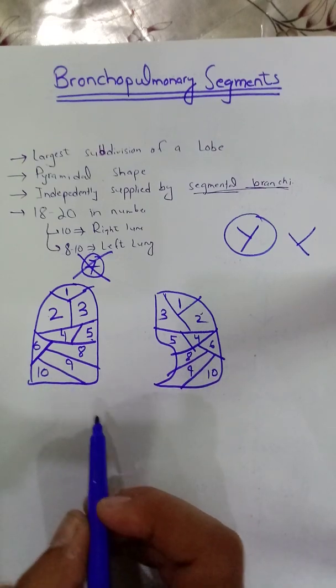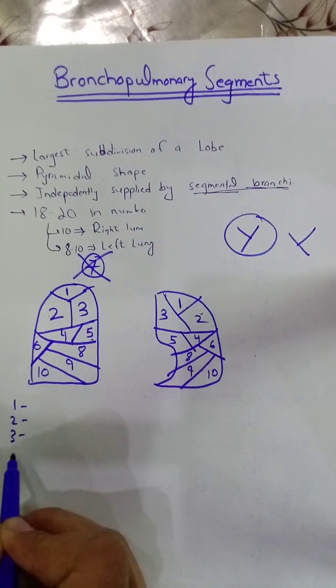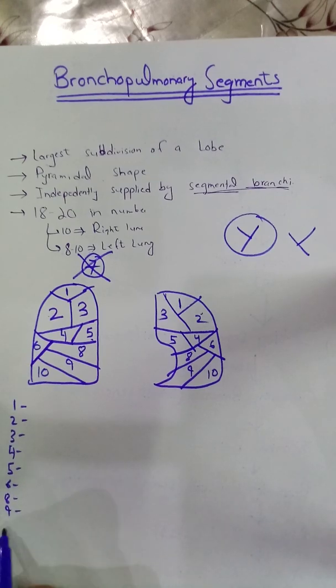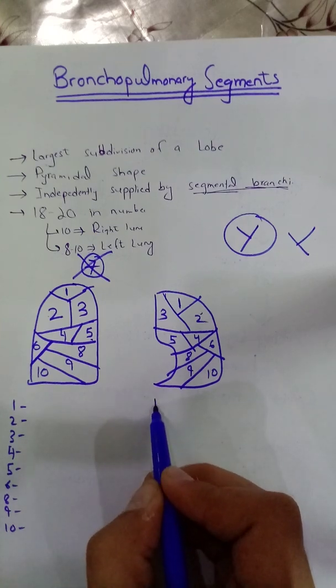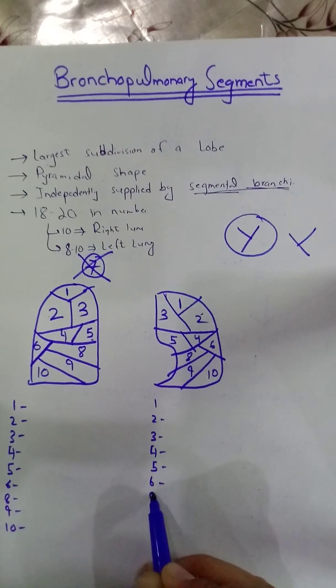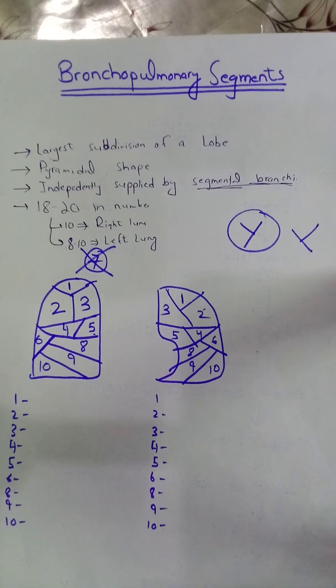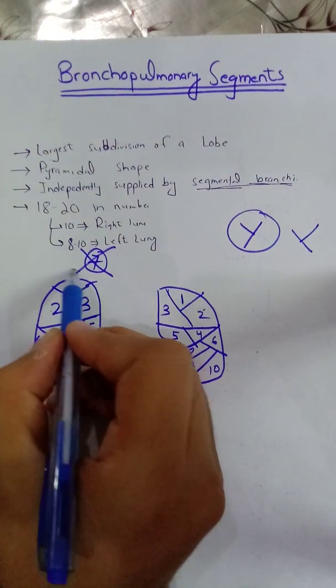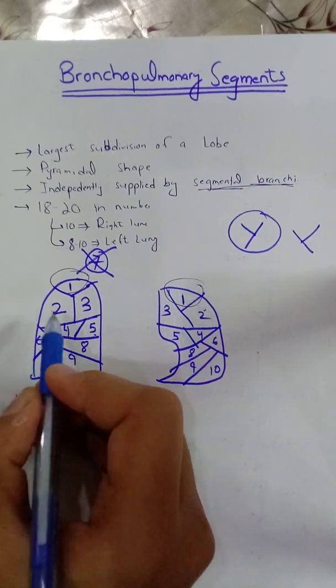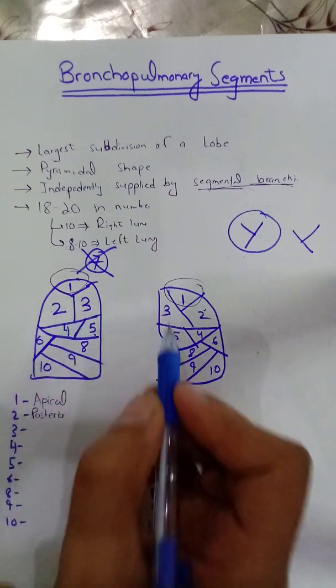Now we will write the names of these. Number 1, as they are on the top, they will be apical. Number 2 will be posterior, and 3 will be opposite to anterior.